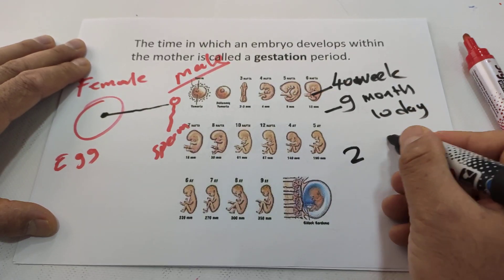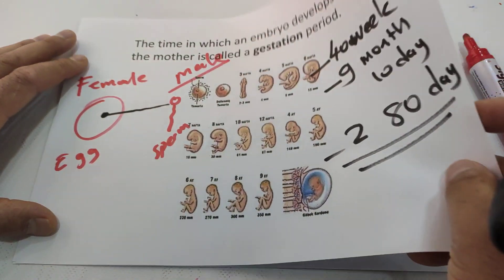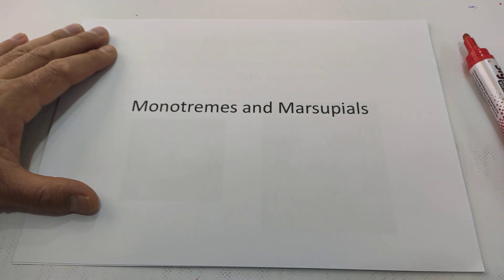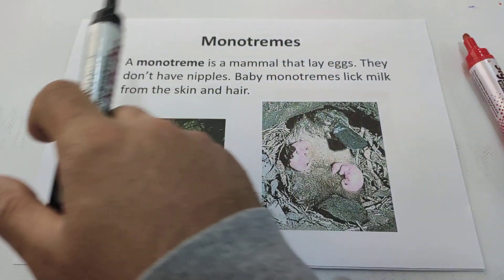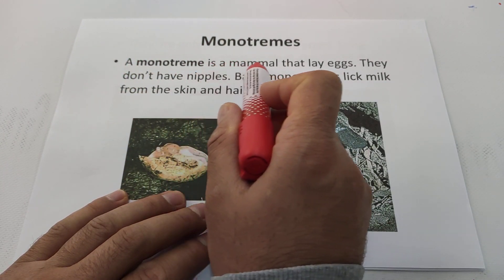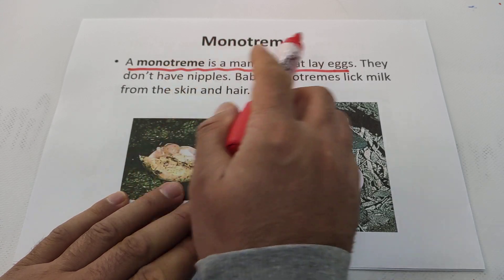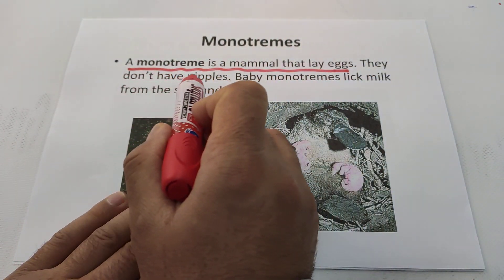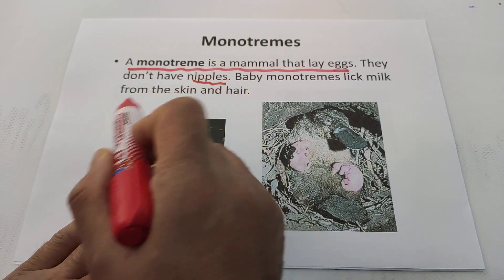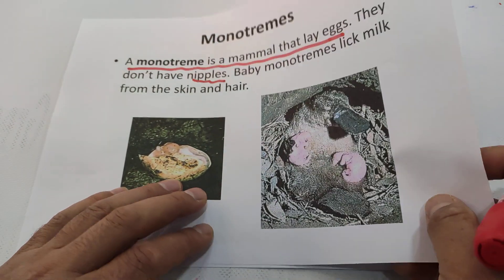That is 280 days — we call that time the gestation period. The other kinds of mammals are monotremes and marsupials. Monotremes are mammals that lay eggs. Normally mammals do not lay eggs, except monotremes. Monotremes don't have nipples; baby monotremes lick milk from the skin or hair because monotremes don't have nipples to drink milk from.